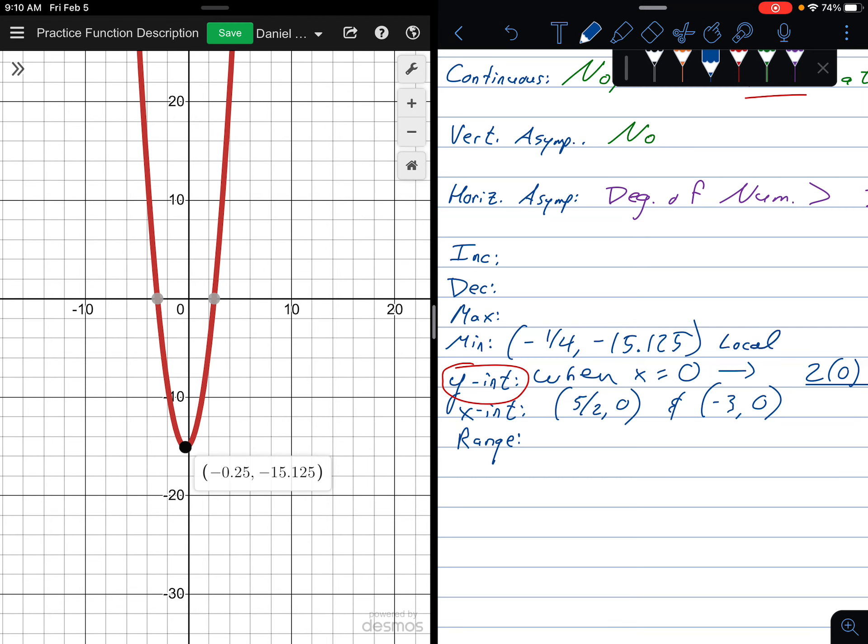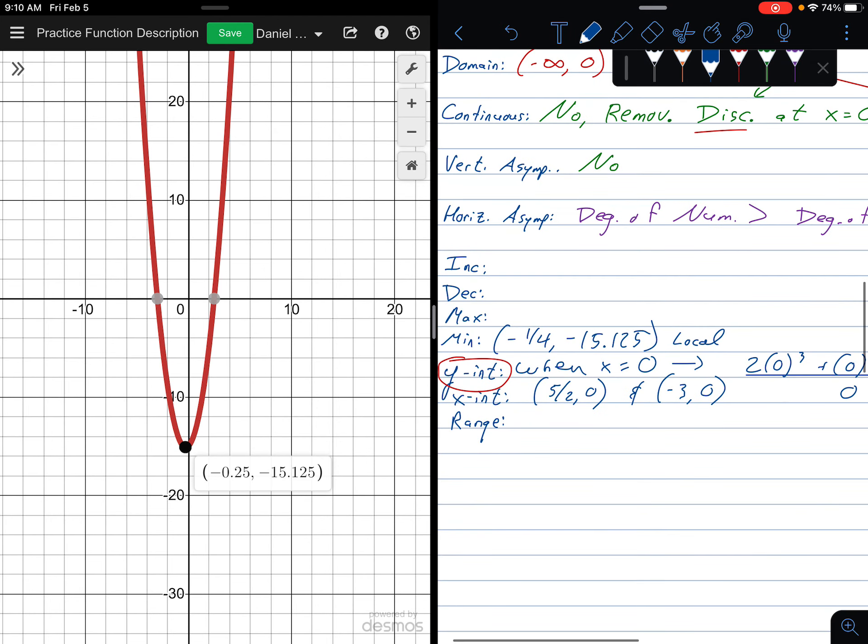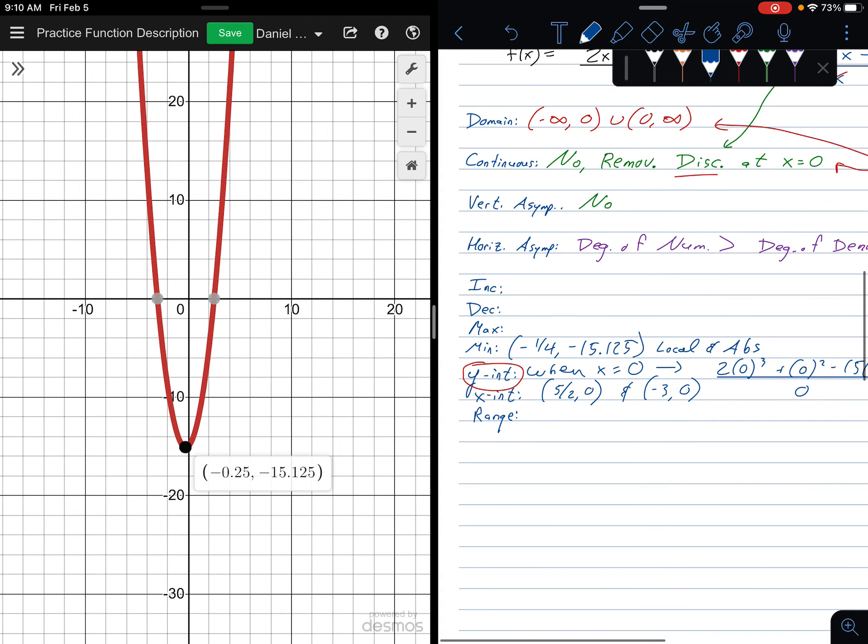It is a local minimum. All minimums are local minimums. All maximums are local maximums. And it's also the absolute minimum because that point is the lowest my graph ever reaches. My graph will never, it's a parabola, so that is the lowest point of my graph.